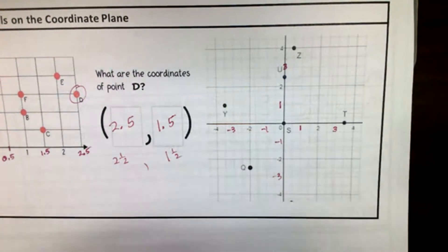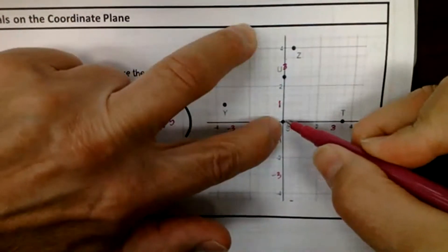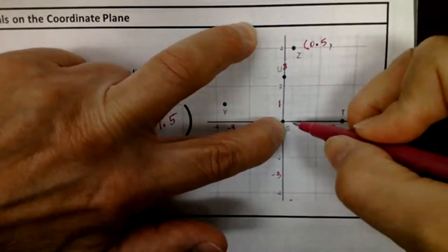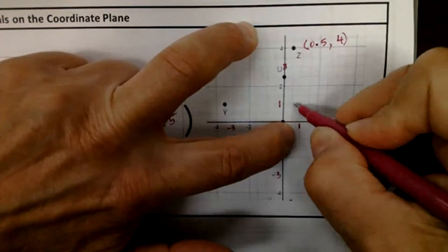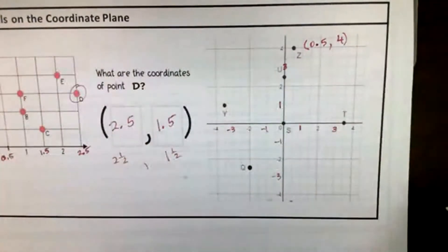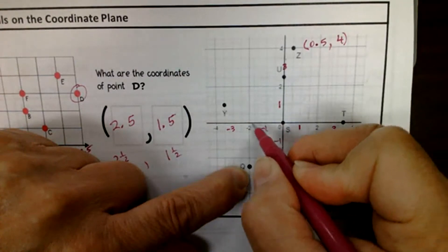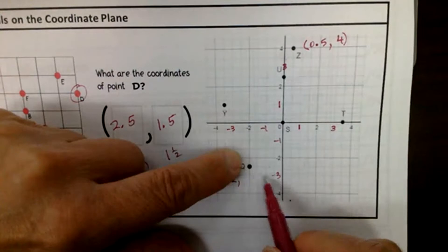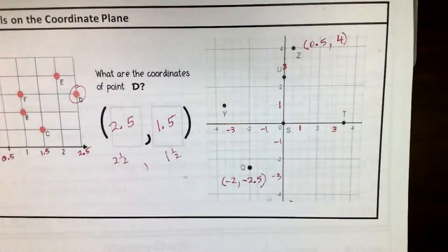Because if you break something up into 10 pieces, half of those pieces are 5 of them — five-tenths is half. So if I want to know where point Z is: I start at 0, 0. I go to half. So the x-coordinate for Z is 0.5, and then it's at 4 for the y-coordinate. So not all the way to 1, just to half, and then up 4. Let's do Q. Q is at: going to the left — so that's negative — negative 1, negative 2. So Q is at negative 2. Then going down: there's negative 2 there, but it's not all the way to negative 3. So negative 2.5.